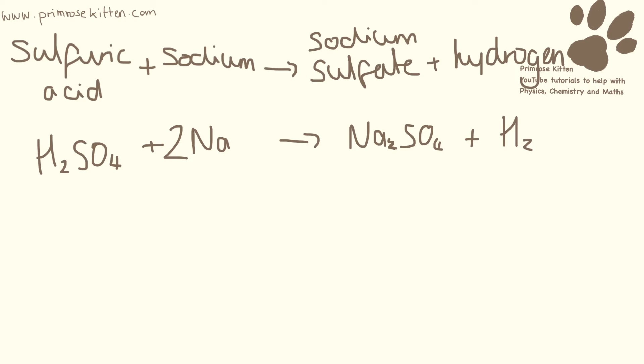So if we look at the ions again, we have H ions, SO4 2- ion, and we have sodium. If the hydrogen goes off to make hydrogen, then the sodium has to go with the sulfate to make sodium sulfate.